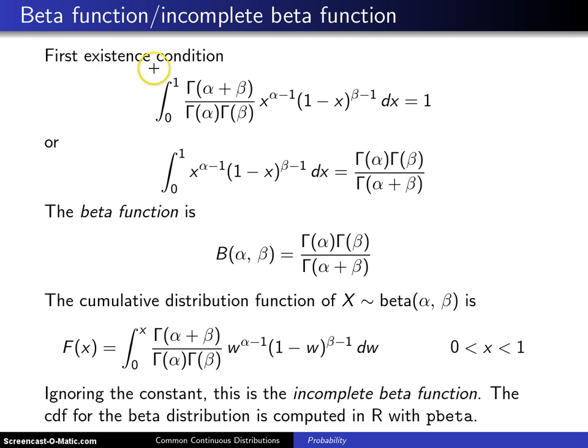First of all, look at the first existence condition for a probability density function. What that says is that for a continuous random variable, the integral over the support, which in this case is from 0 to 1, of the probability density function of the beta distribution, dx equals 1.